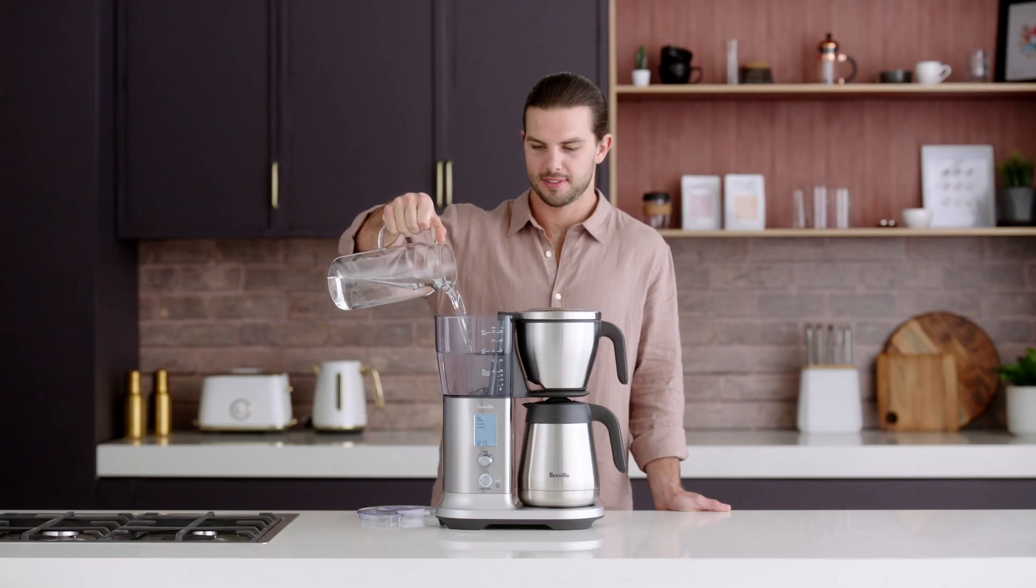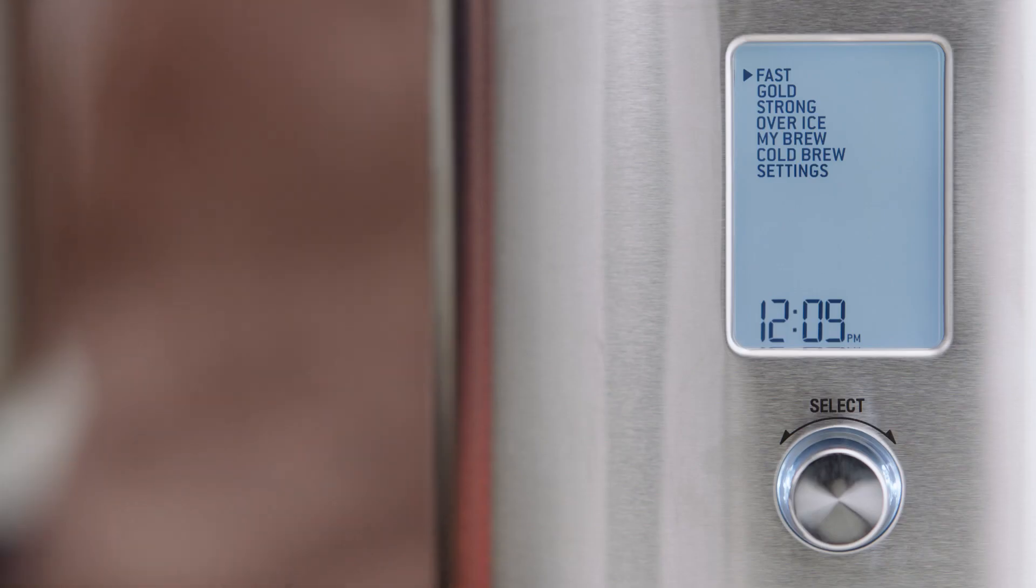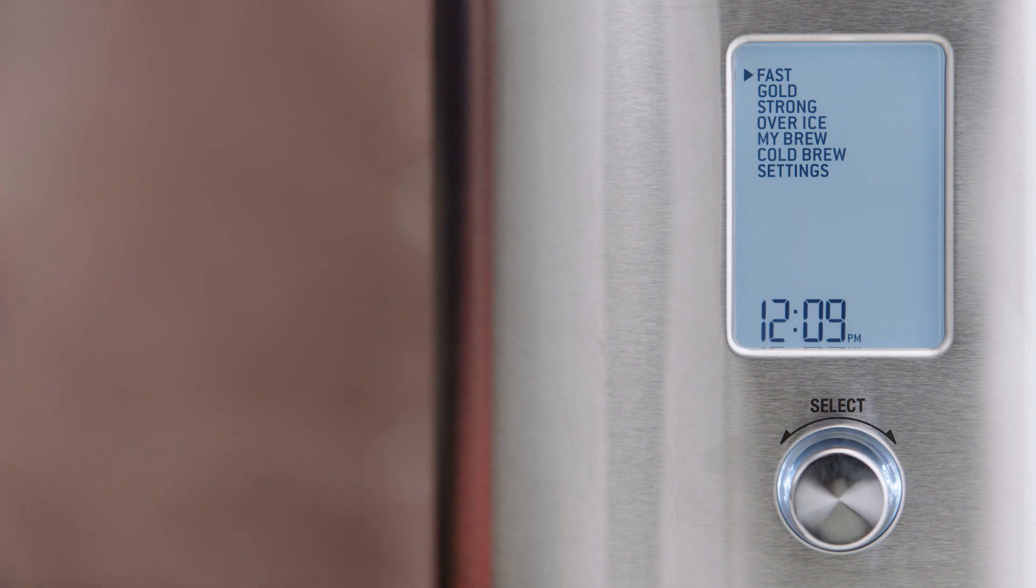Refill the water tank to the max line. We're now ready to brew your first carafe. As you've filled the water to the max line, the precision brewer will now display four options on the LCD. You'll see the fast, gold, strong, my brew, and the settings option. The additional modes of over ice and cold brew will be disabled unless you have less than four cups of water in the tank.